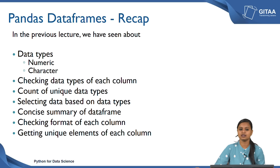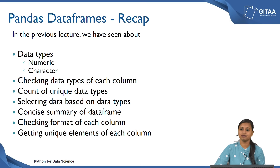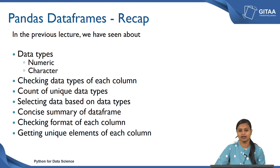We also saw how to select data based on data types. For example, if we want to perform operations only on a specific data type, we can do that by selecting data based on that particular data type. We also looked at the concise summary of the data frame, which showed the data type of each variable, how many non-null values are there under each column, and the memory used by the data frame.